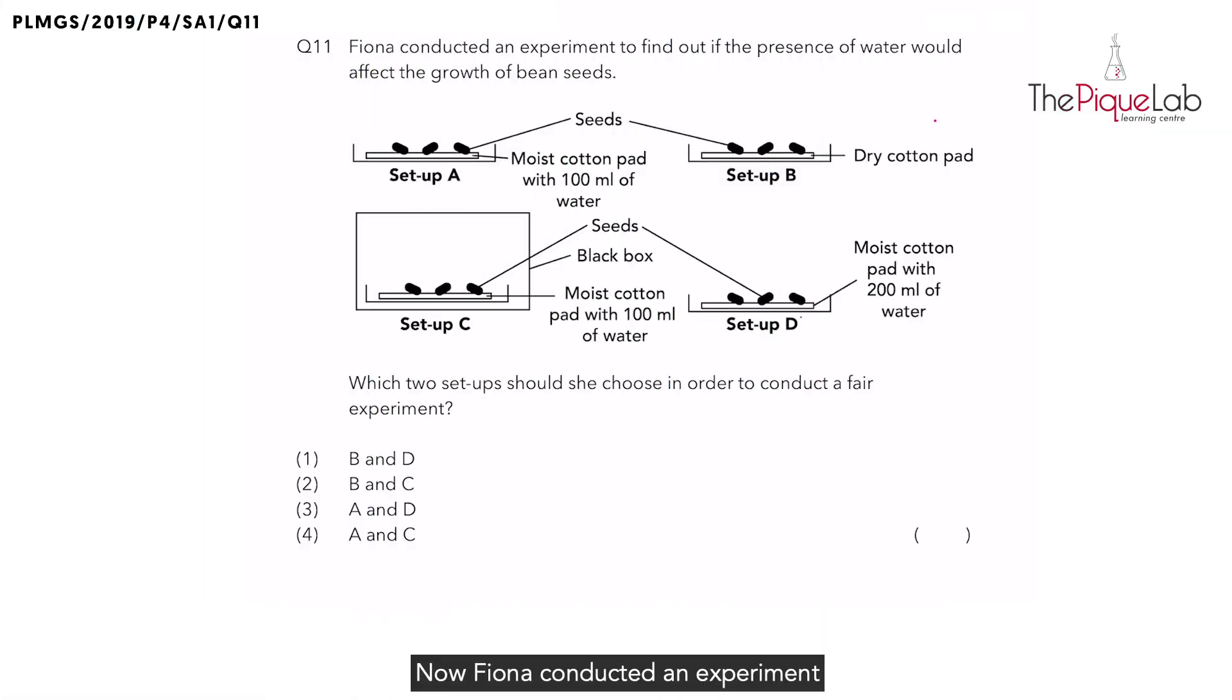Fiona conducted an experiment to find out if the presence of water would affect the growth of the green beans. So whenever we see a statement like this, when you see 'to find out,' this actually indicates the aim of the experiment. What you can do is box up the word 'if' and 'effect' and then underline the words in between the two boxes as well as the words after the second box until the full stop.